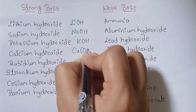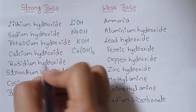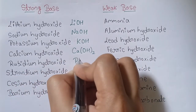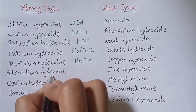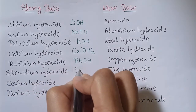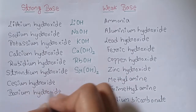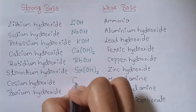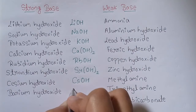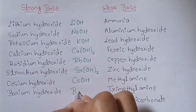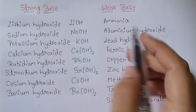Continuing strong bases: rubidium hydroxide (RbOH), strontium hydroxide (Sr(OH)2), cesium hydroxide (CsOH), and barium hydroxide (Ba(OH)2).